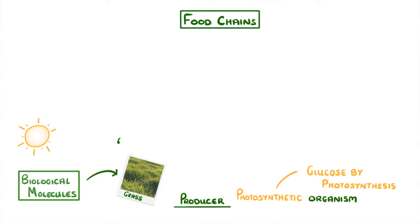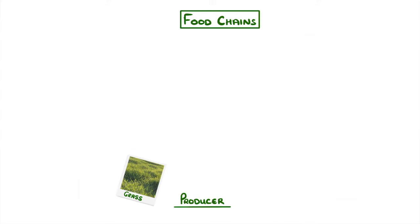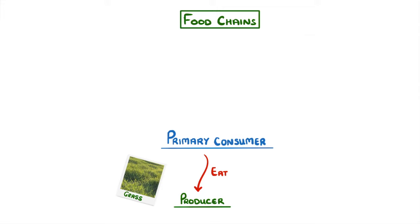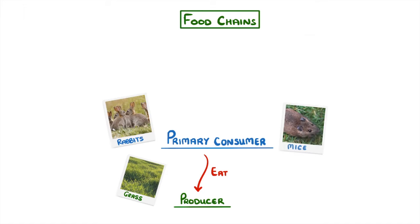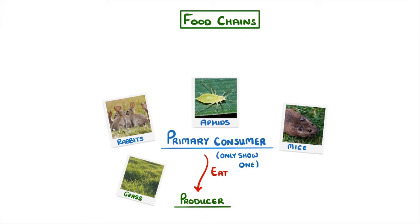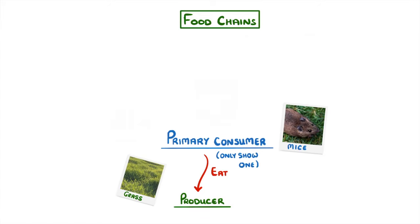Once these molecules have been incorporated into the plant, we call it biomass. The next step in the chain are the primary consumers, which eat the producers. Even though there might be lots of different primary consumers in a particular ecosystem — like rabbits, mice, aphids and so on — we only show one of these in the food chain, so let's stick with mice.